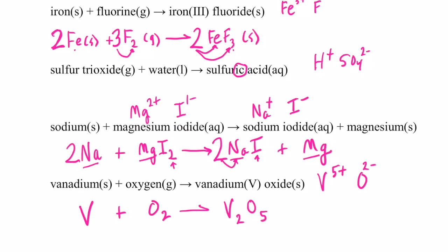Let me take care of oxygens first. Five and two have a common multiple of ten — put a two in front of V₂O₅ to give ten oxygens, and a five in front of O₂ to give ten oxygens. Then I have four vanadiums on the right, so put a four in front of V on the left. We'll have lots of chances to practice these in class — see you soon, bye-bye.